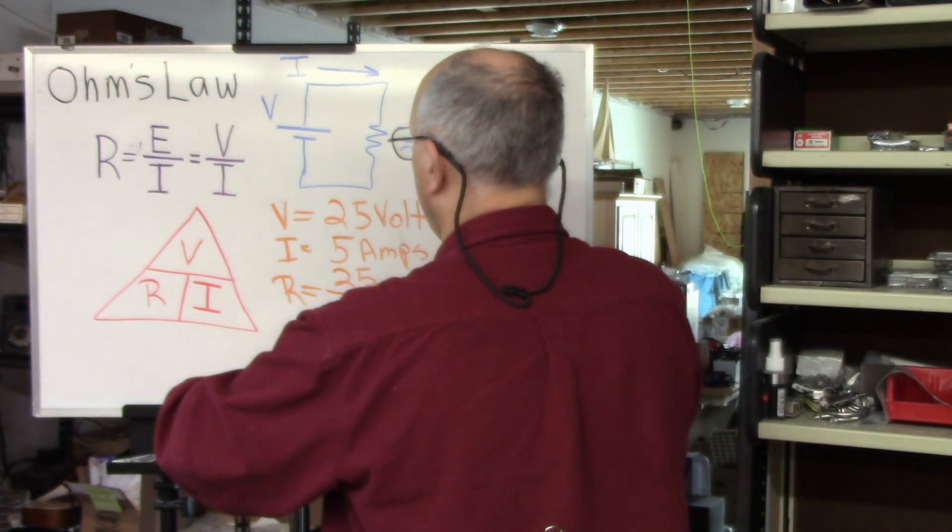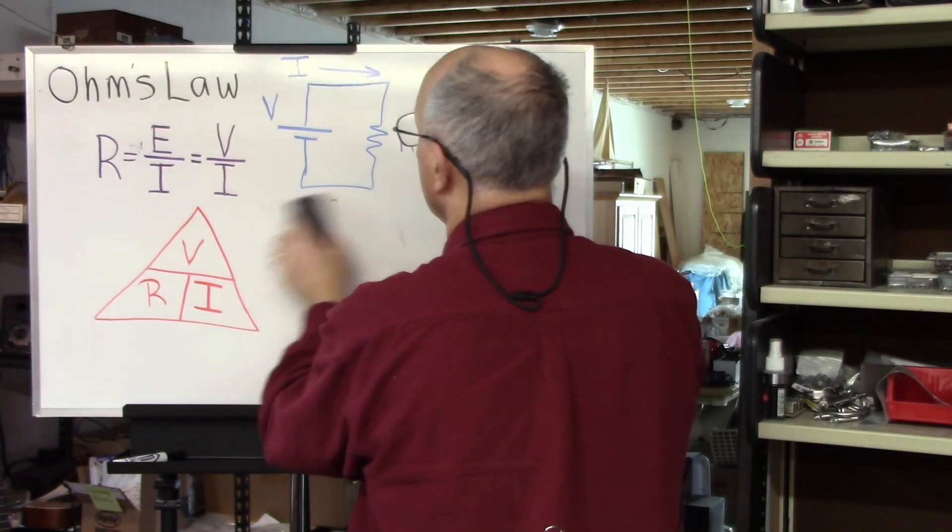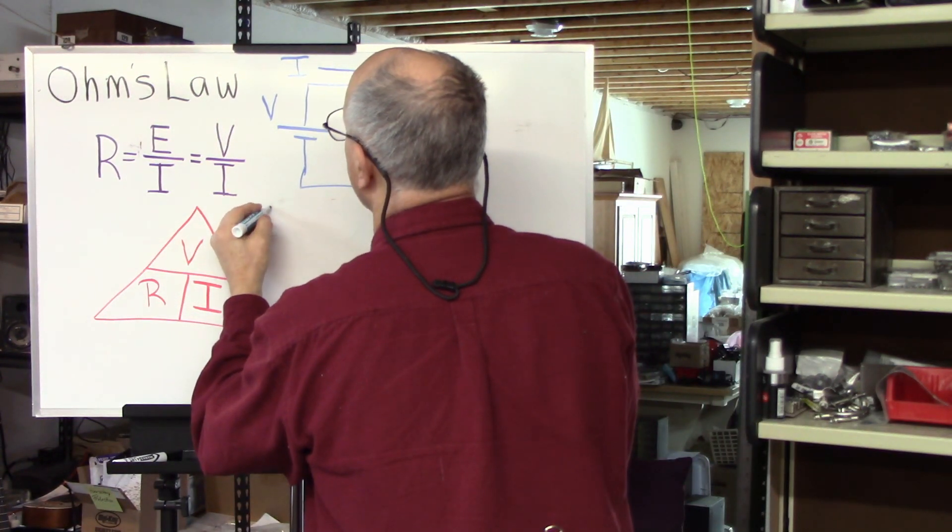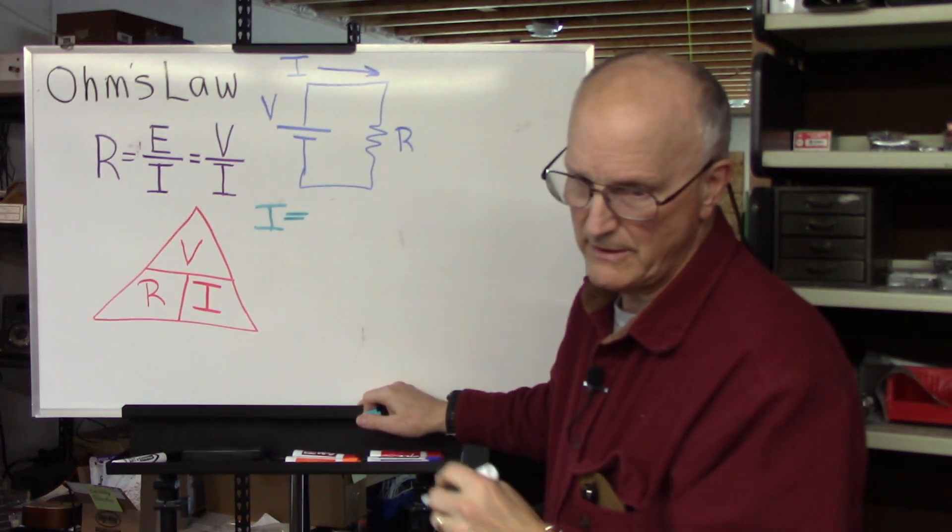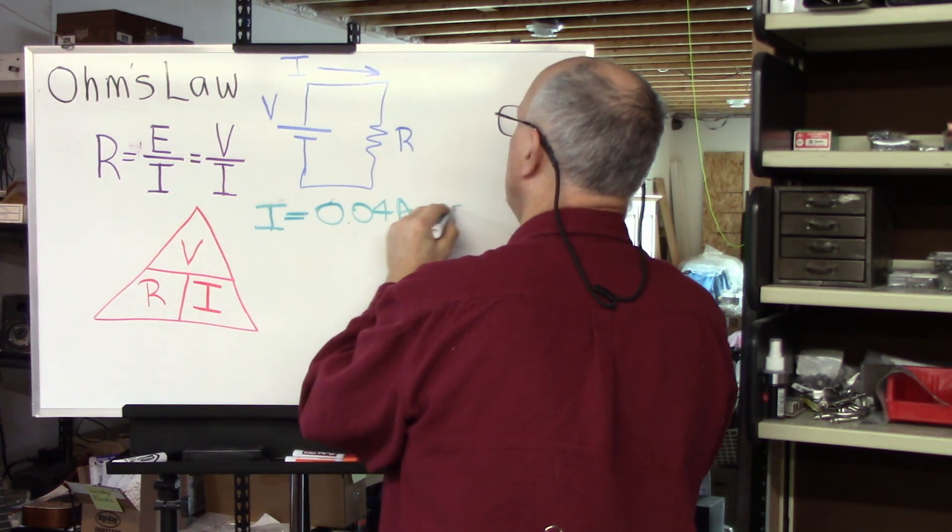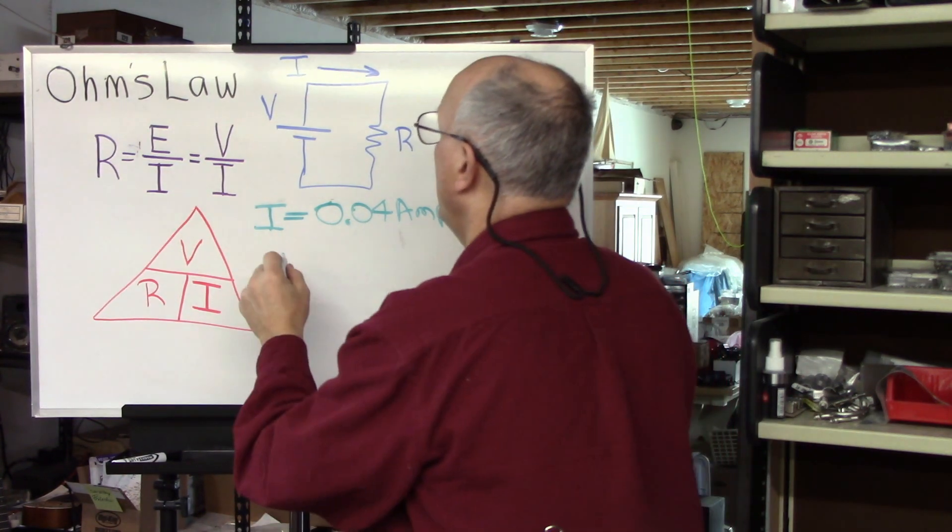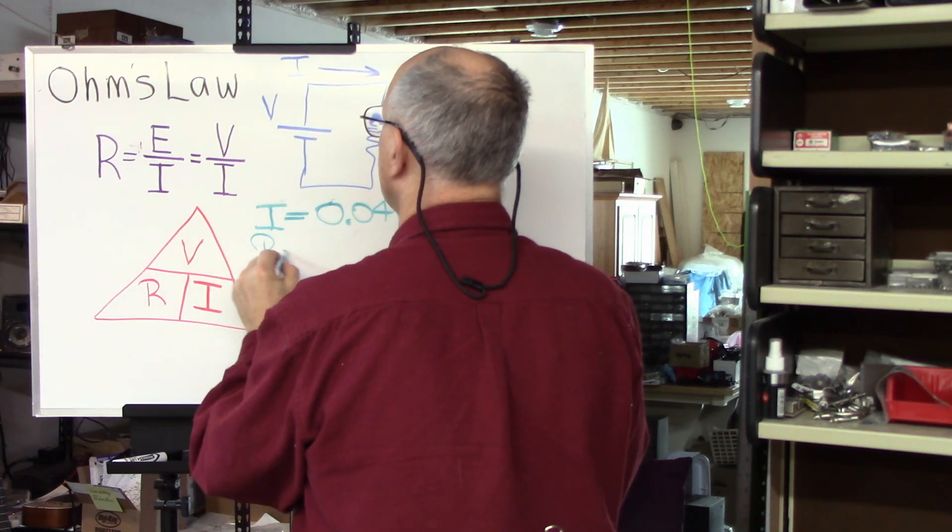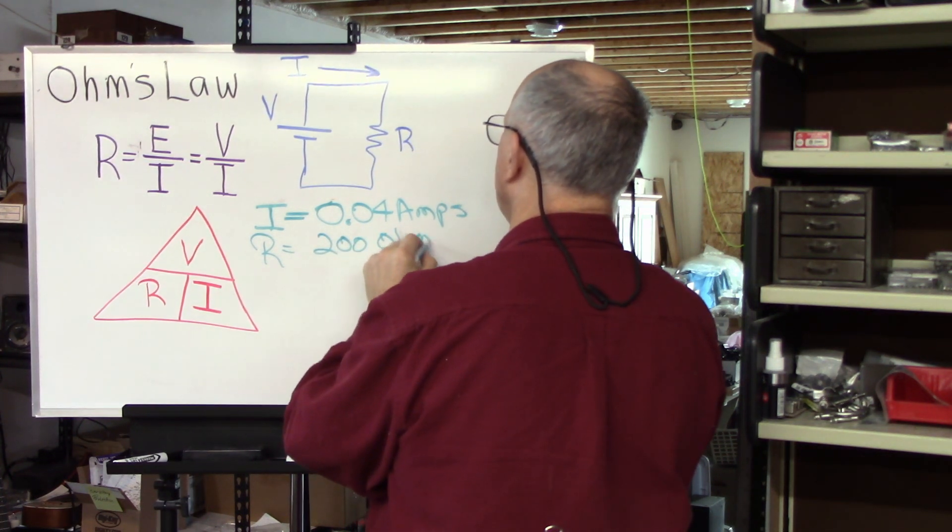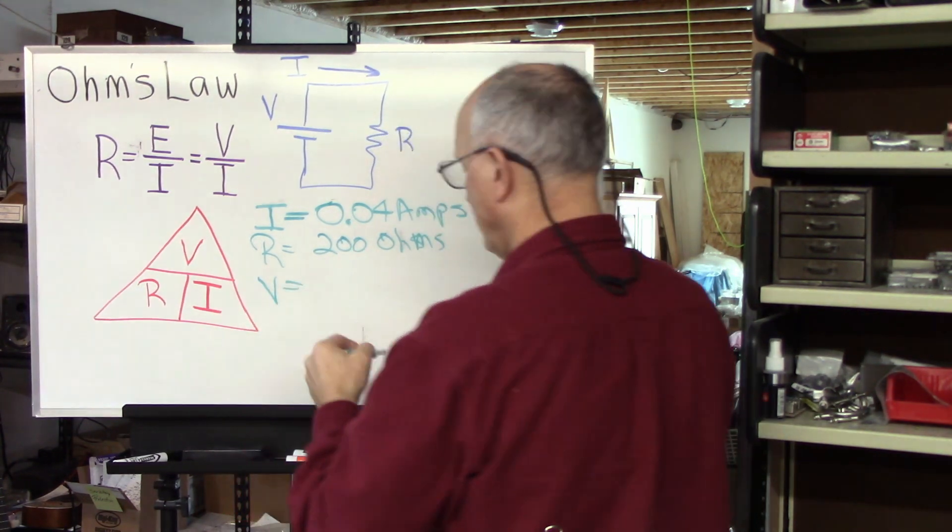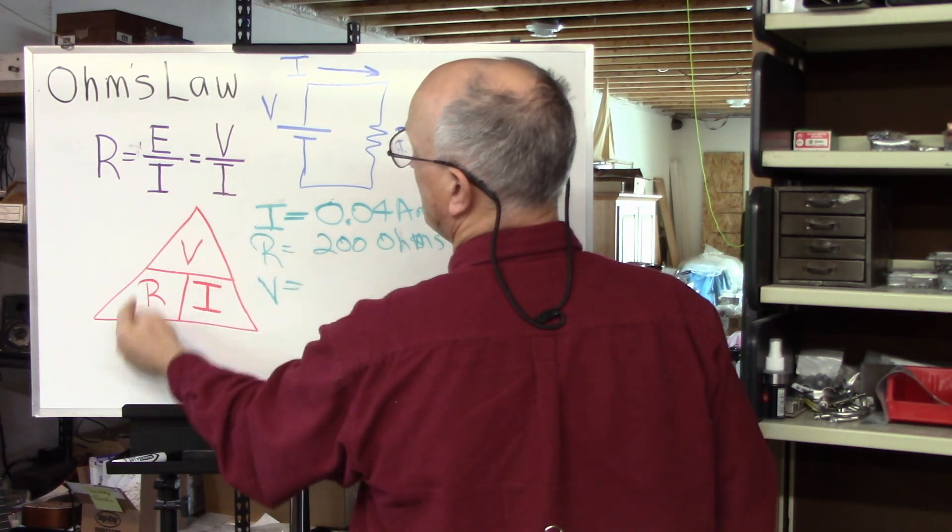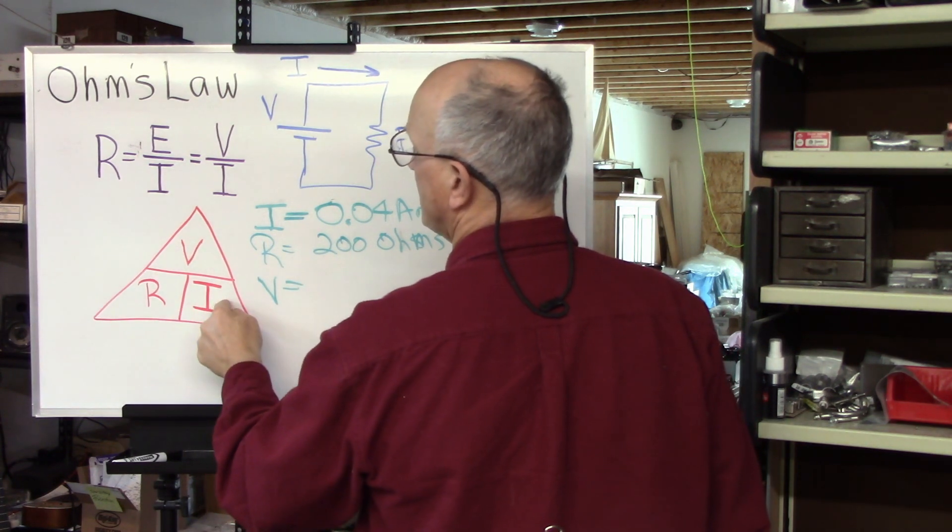All right. One last one. What if we want to find the applied voltage? We know that the current in this circuit is 0.04 amps. And we know that the resistance is 200 ohms. So what's the applied voltage? Well, again, we want to find voltage, so we cover that up. Voltage in volts is equal to the resistance in ohms times the current in amps.